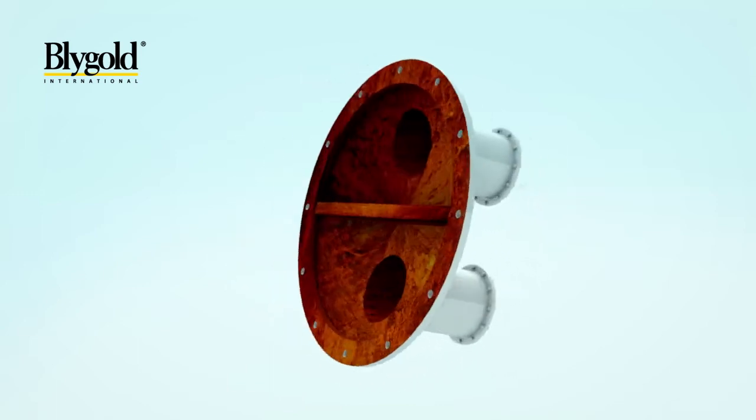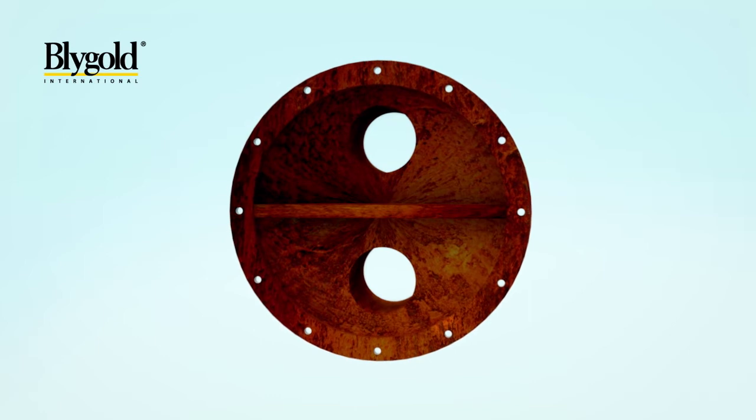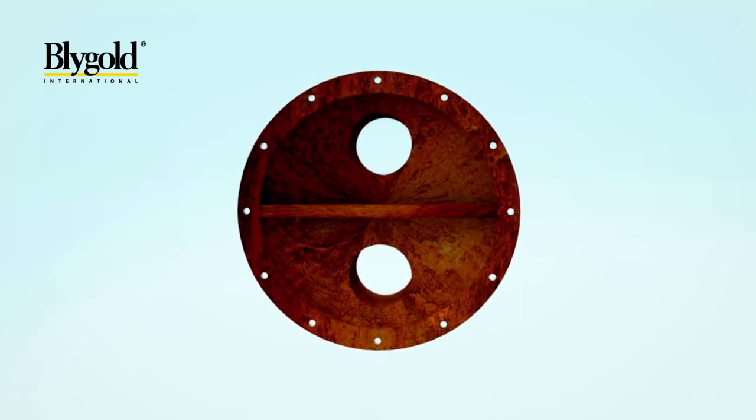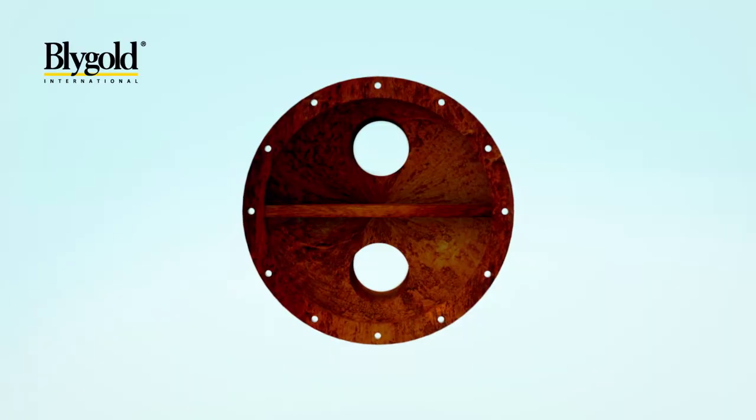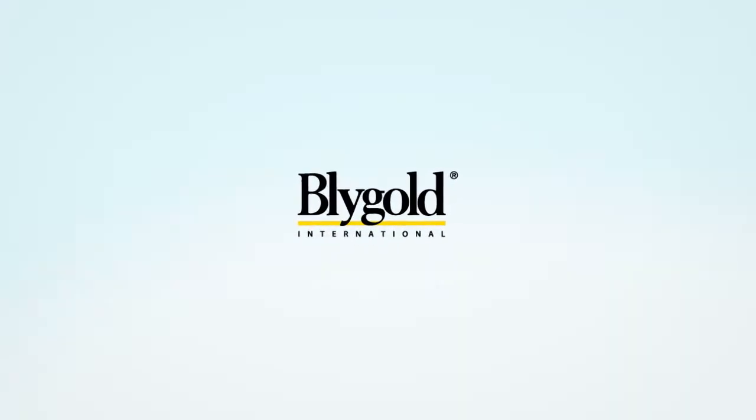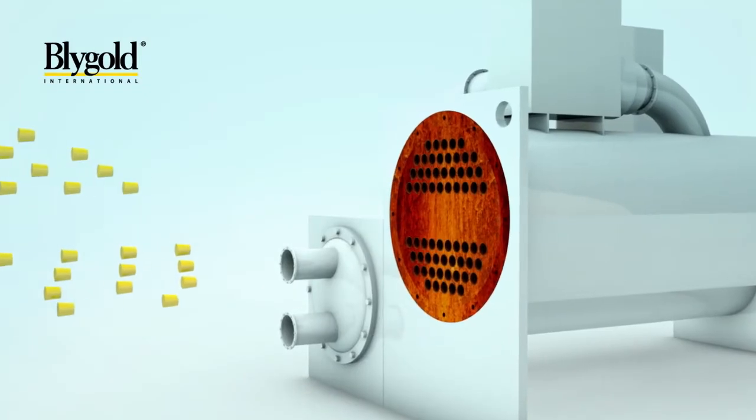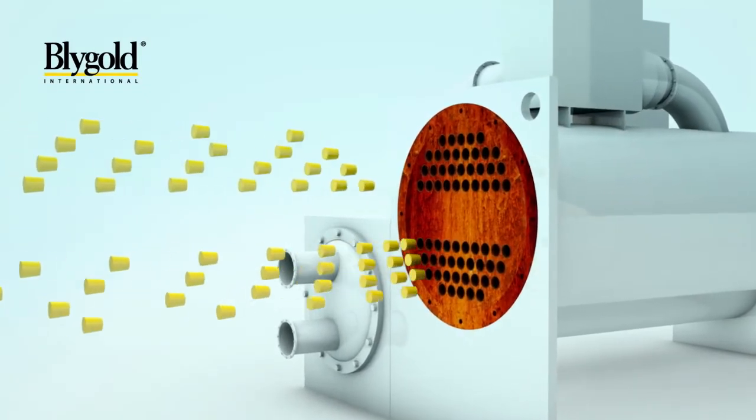To save the chiller from early breakdown and replacement, the corrosion process must be stopped and corroded metal material must be replaced. Blygold has developed a special cladding system for protecting these chillers. To obtain a high-quality protection, a precise pre-treatment is essential.